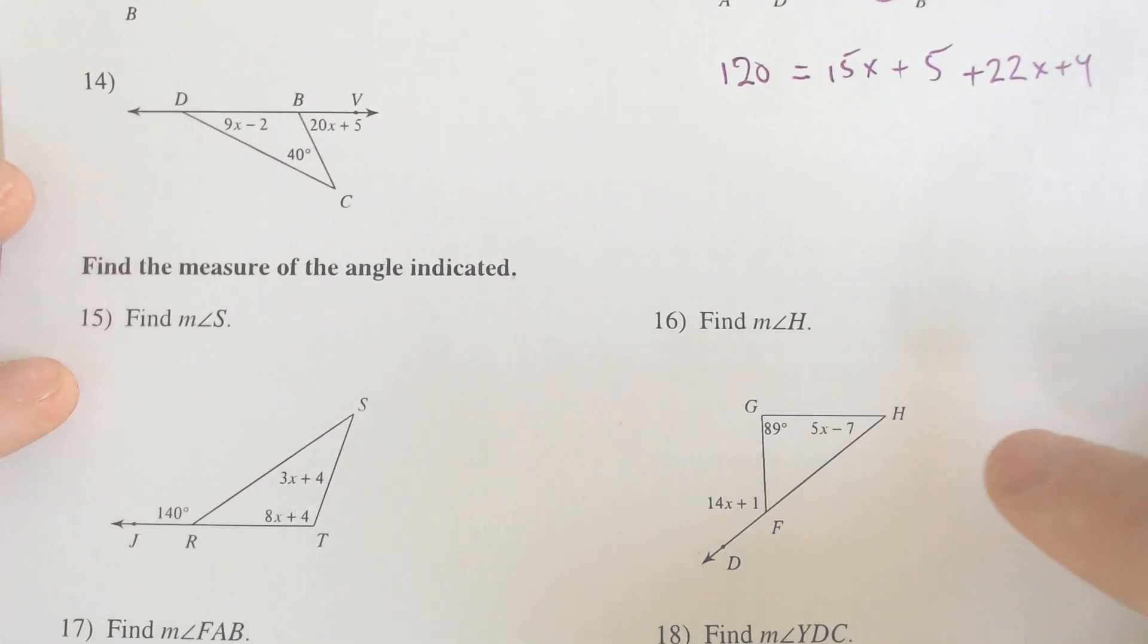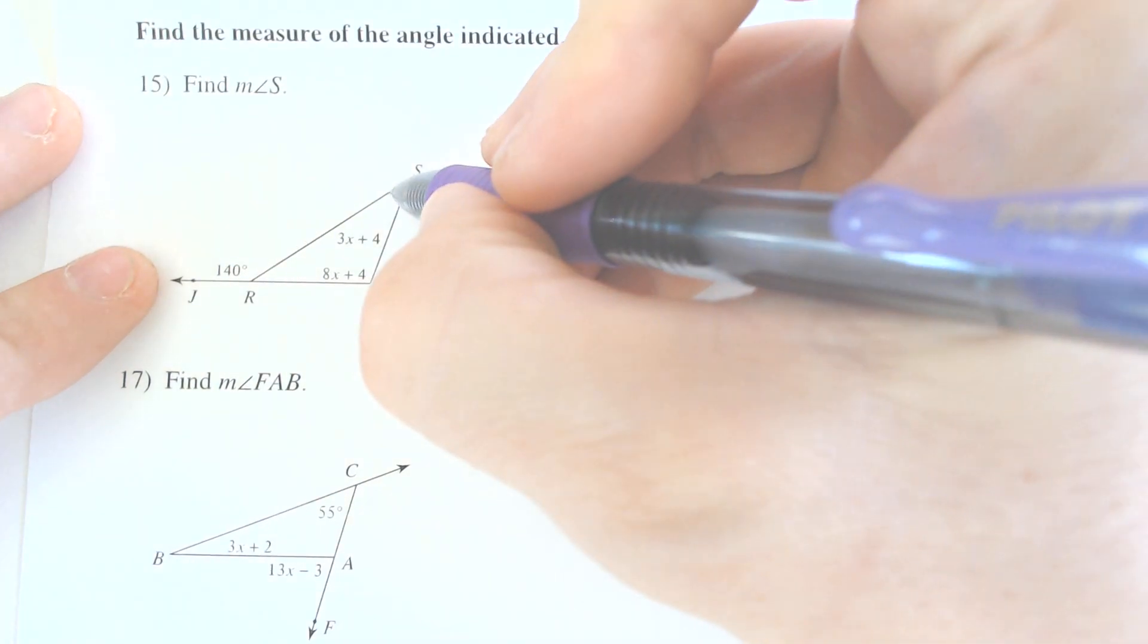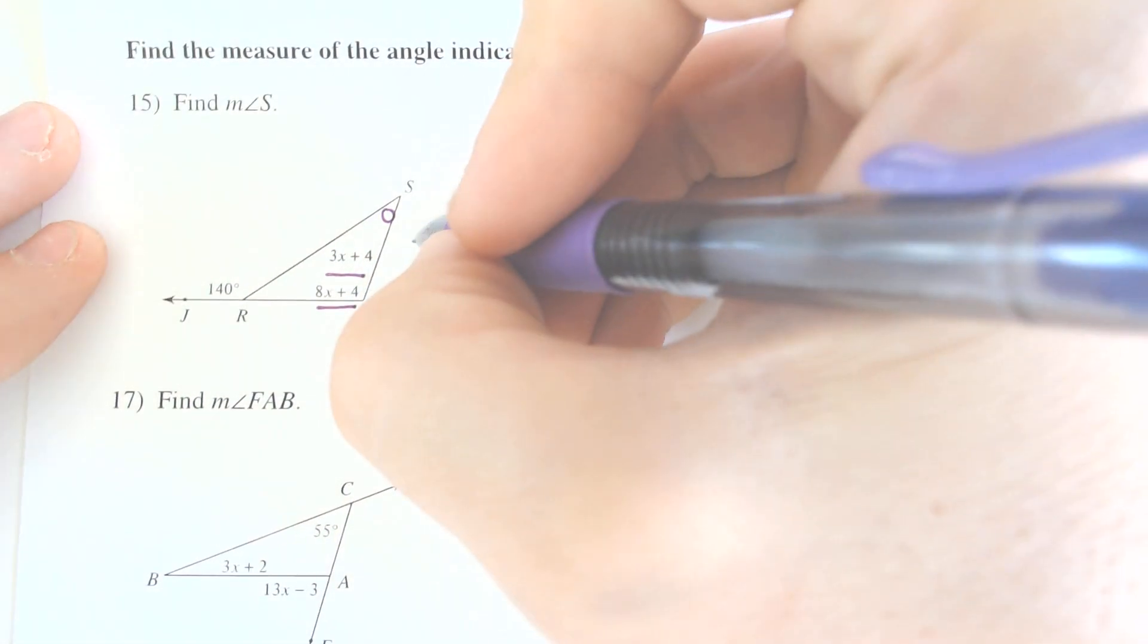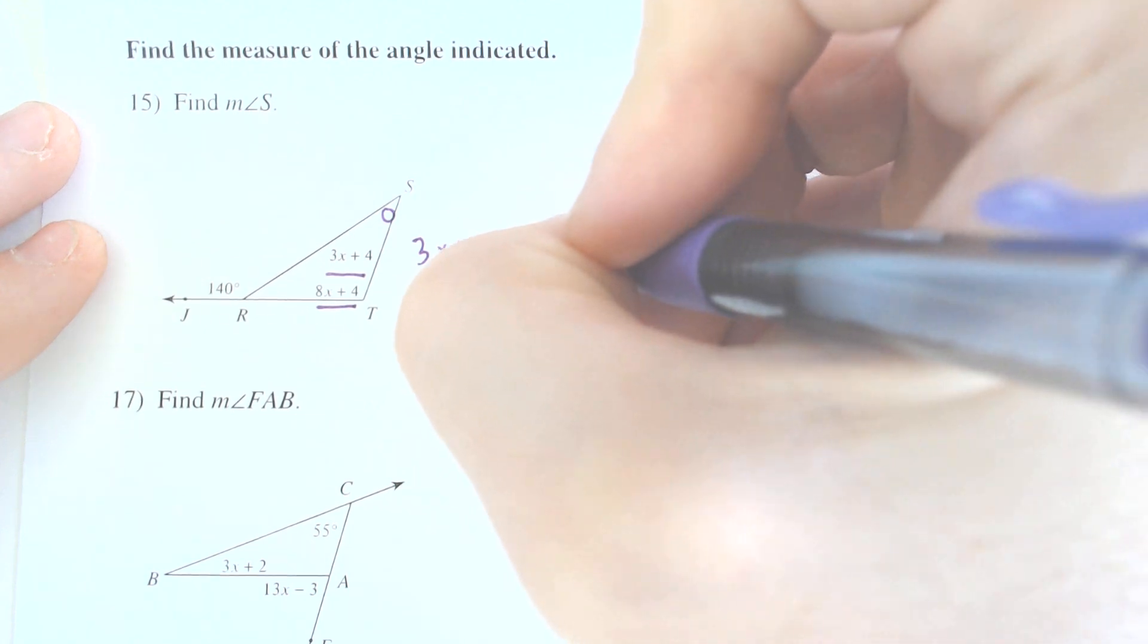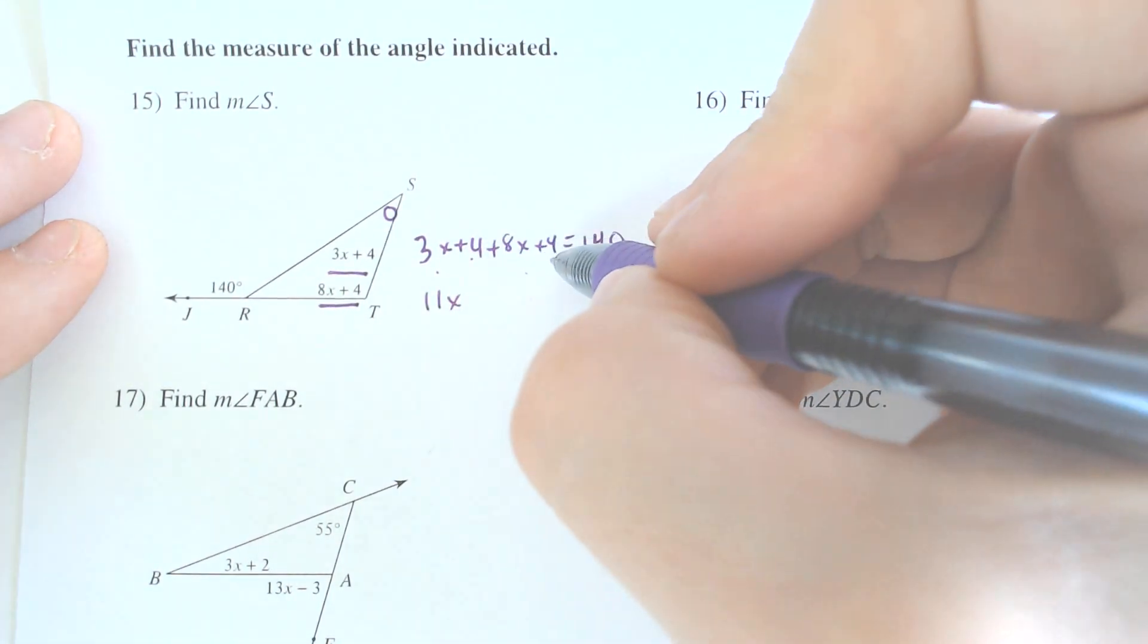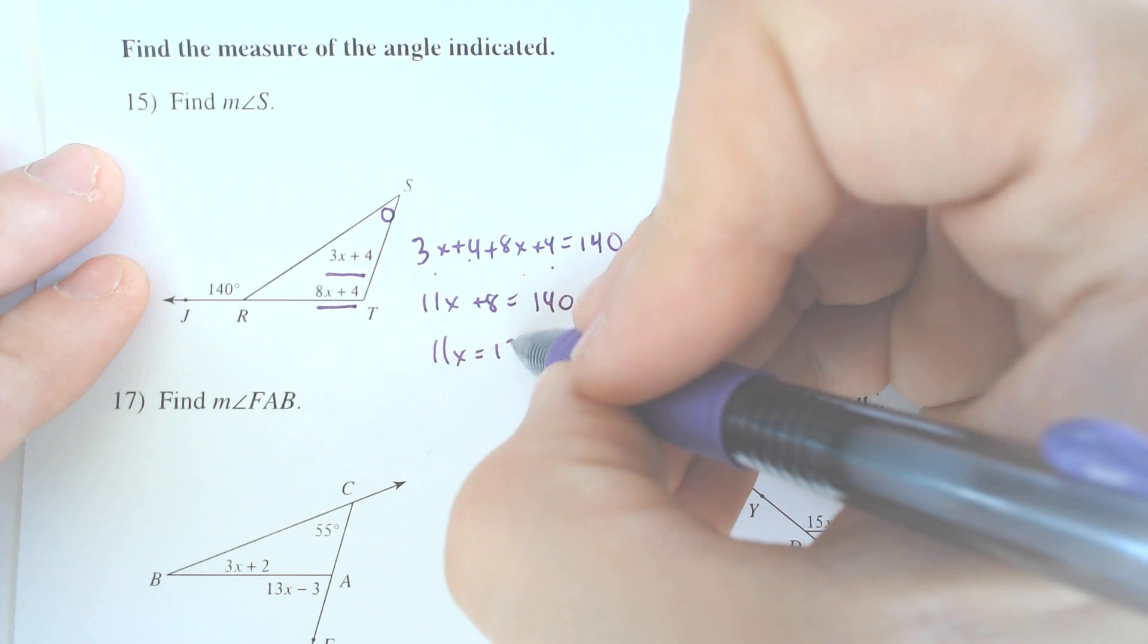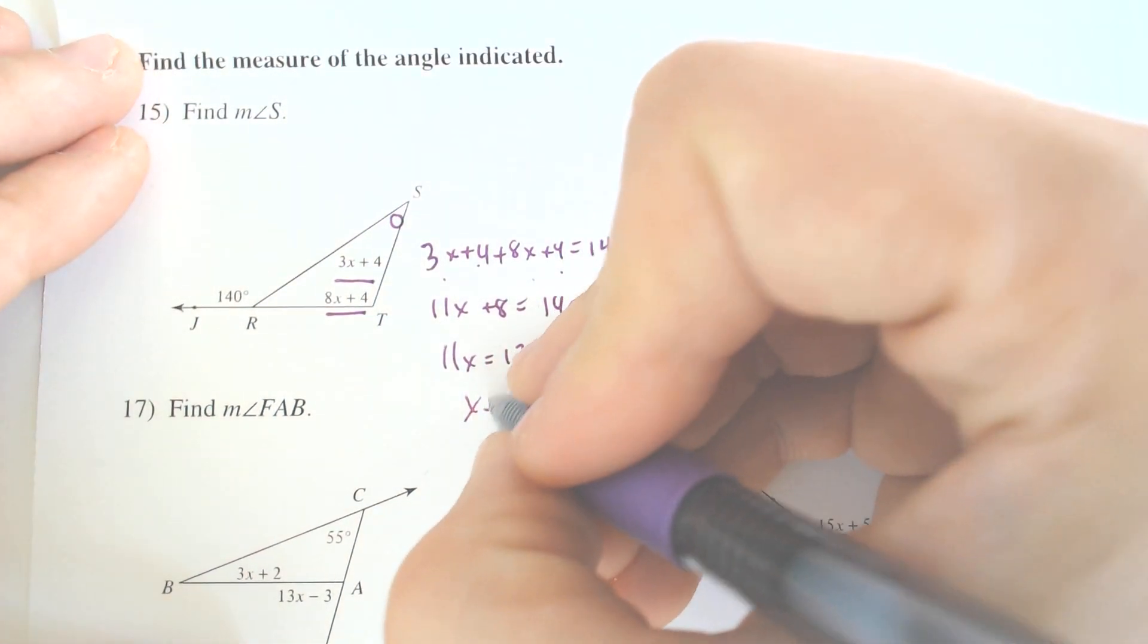Let's find some of these angles out here. We want to find angle S, this angle up top. So in order to do that, we need to know what x is. We have angle S and angle T here. Those two are the interior angles. The two interior angles must always add to equal the outside, which in this case was 140. So we got 3x and 8x, that makes 11x. We got 4 and 4, that makes 8. Those combine like terms, we get 140. We subtract, we get 11x is equal to 132. And then if we divide 132 by 11, you get 12 for x.